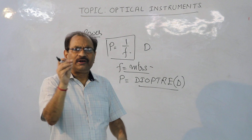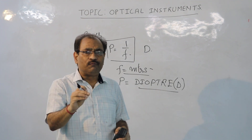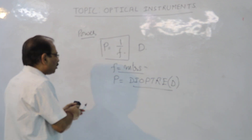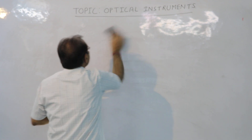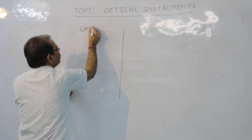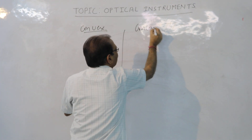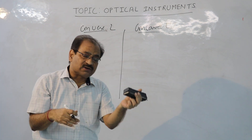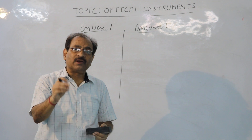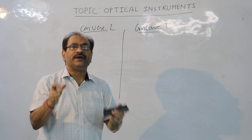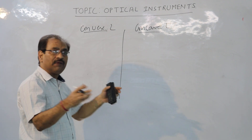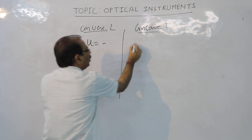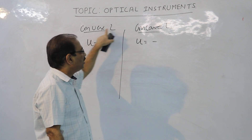Before moving ahead, we will discuss some things which are very important for the point of view of numerical problems. As per new science conventions, we have got two types of lenses: convex lens and concave lens. When you solve a numerical problem, in some numericals focal length will be taken as plus, in some it will be taken as minus — this all depends upon our new science conventions. Like we have already done in the topic of reflection, U, the distance of object, is always taken as negative in both cases — whether convex lens or concave lens, U is always minus.